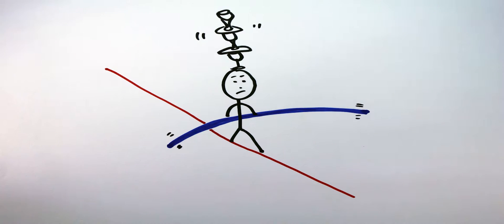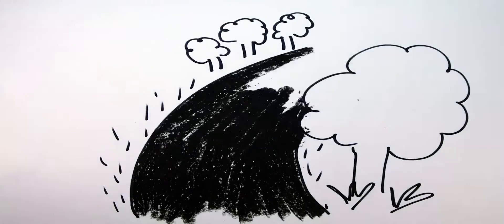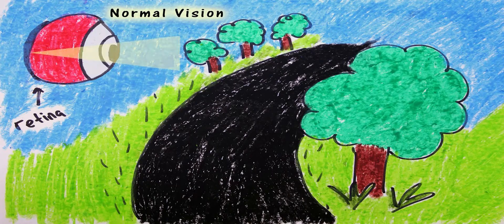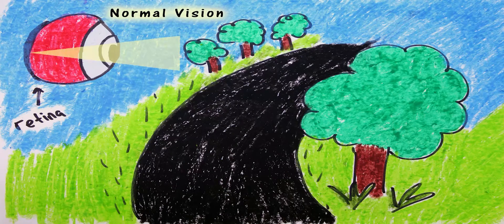People wear glasses for many reasons. However, they are most commonly used in correcting nearsightedness and farsightedness. Normal vision happens when light is focused exactly on the retina and the image becomes clear.